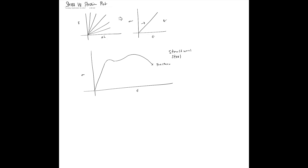First, we have the elasticity limit. Up to point A, the plot is more or less linear — a straight line. If you know the stress at this point, call it sigma one, and the strain here, call it epsilon one, then you can find the Young's modulus: E equals sigma one divided by epsilon one. Knowing sigma one and epsilon one, you know the value of E.